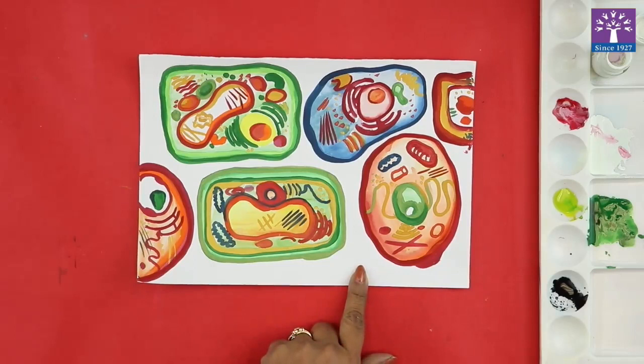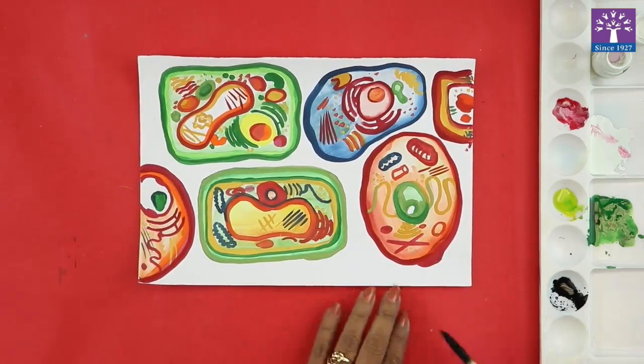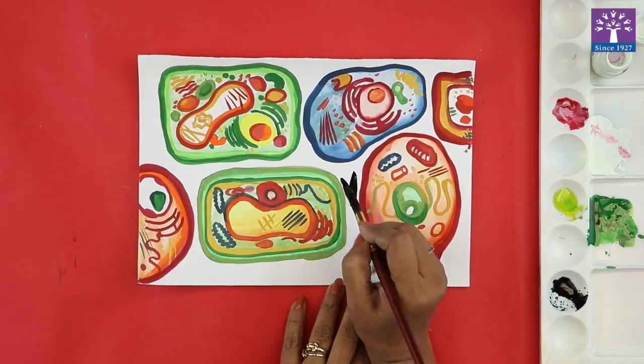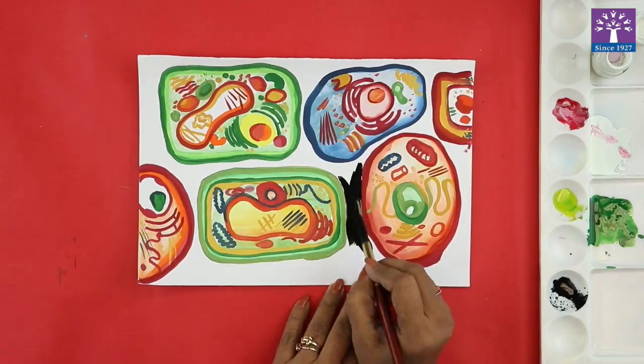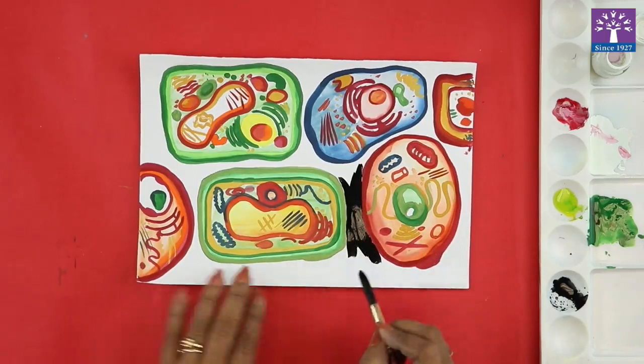Now we'll paint the background or the negative part of the painting in solid black color. Very slowly and neatly paint the background.